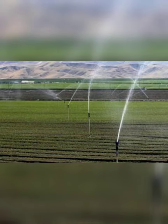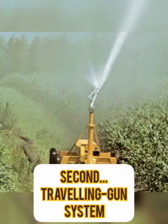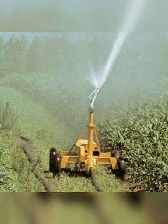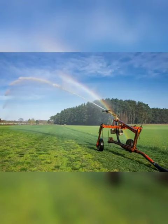Number two is the traveling gun system. These systems are relatively expensive, but labor cost is reduced compared to hand-moved sprinklers. They are well suited to irrigating large fields and tall crops. Uniformity of water distribution is greatly affected by wind conditions.